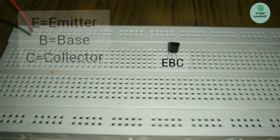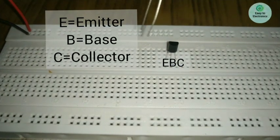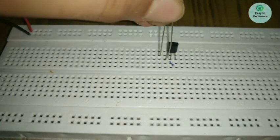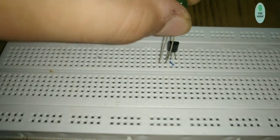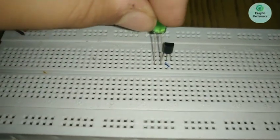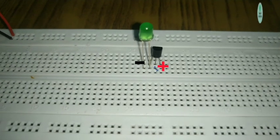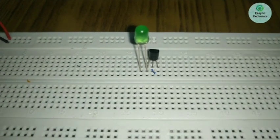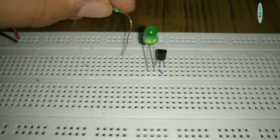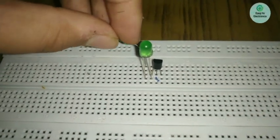Now take the LED and put the positive terminal in the emitter of the transistor. Now connect the negative terminal of the LED to the negative lane via a 560 ohm resistor.